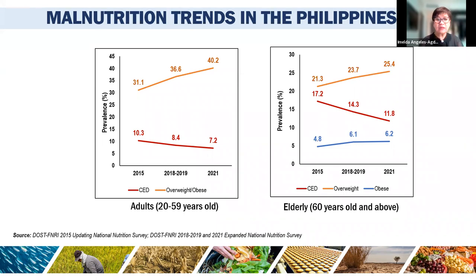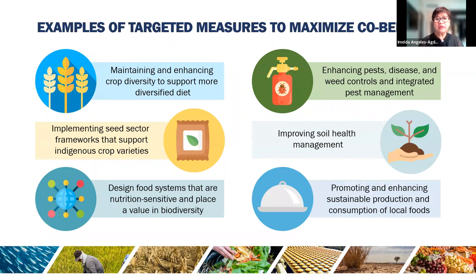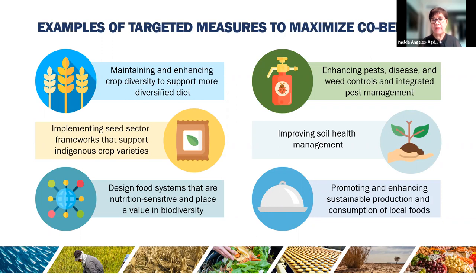Examples of targeted measures to maximize co-benefits include: maintaining and enhancing crop diversity to support more diversified diets, implementing seed sector frameworks that support indigenous crop varieties, designing nutrition-sensitive food systems that place value on biodiversity—already included in the Philippine Plan of Action for Nutrition—and enhancing pest and disease control through integrated pest management, improving soil health management, and promoting sustainable production and consumption of local indigenous vegetables and fruits.